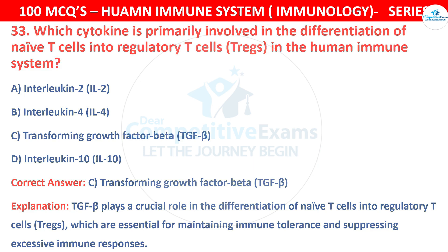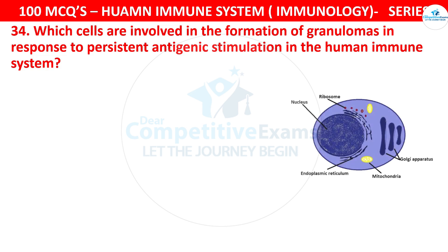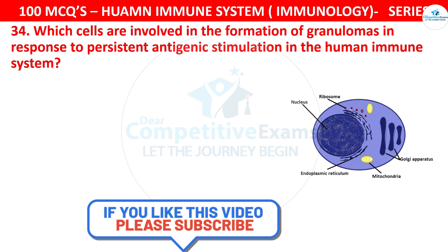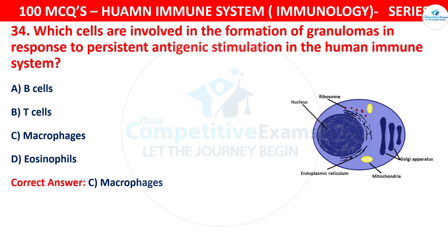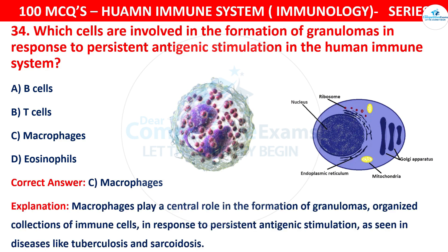Question 34: Which cells are involved in the formation of granulomas in response to persistent antigenic stimulation in the human immune system? The options are B cells, T cells, Macrophages, or Eosinophils. The correct answer is C, that is Macrophages. Macrophages play a central role in the formation of granulomas — organized collections of immune cells — in response to persistent antigenic stimulation, as seen in diseases like tuberculosis and sarcoidosis.